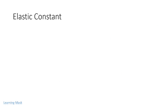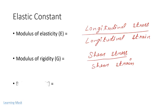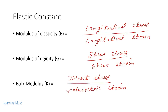Elastic constants are factors that determine the deformation produced by a given stress system. Modulus of elasticity (E) is the ratio of longitudinal stress to longitudinal strain. Modulus of rigidity (G) is the ratio of shear stress to shear strain. Bulk modulus (K) is the ratio of direct stress to volumetric strain.